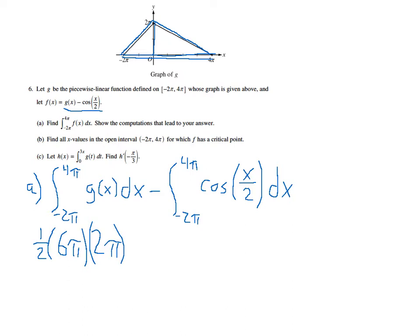And then over here, I actually need to anti-differentiate and then evaluate. We know, of course, that the anti-derivative of cosine is sine, but we've got to be careful because it's not just cosine of x, it's cosine of x over 2. So you're going to actually get 2 times the sine of x over 2.